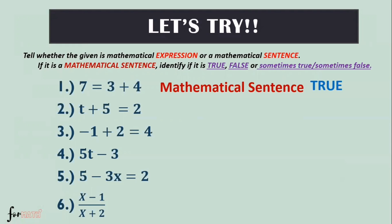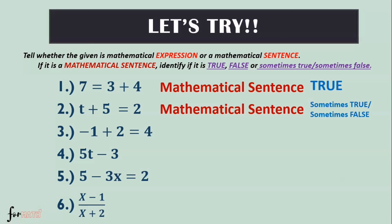Number two: 'p + 5 = 2.' This is a mathematical sentence, and it is sometimes true, sometimes false, because we don't know the value of p. Number three: '−1 + 2 = 4.' This is a mathematical sentence, and it is a false sentence because negative one plus two is not equal to four.